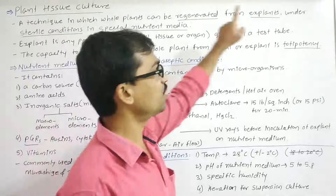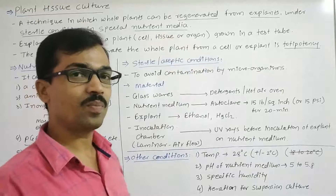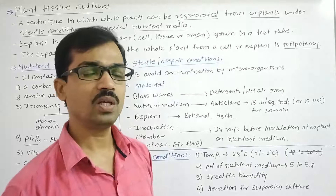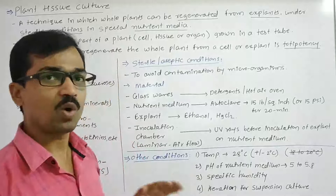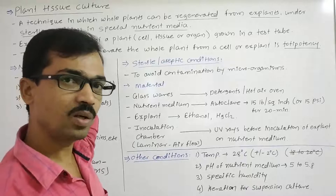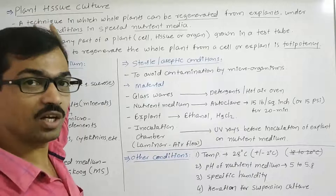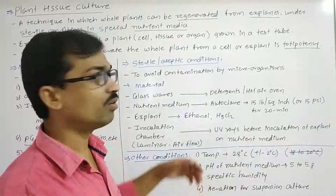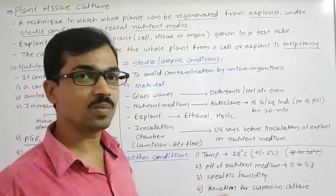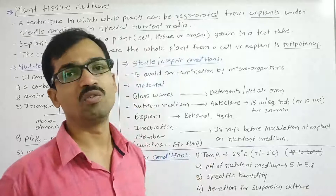Plant tissue culture is carried out under sterile conditions, where apart from the specific plant being grown, no microorganisms like bacteria or fungi are allowed to grow. There is no contamination from any unwanted microorganism. This growth of plants from cells, tissues, or organs into whole plants is carried out on special kinds of nutrient media.